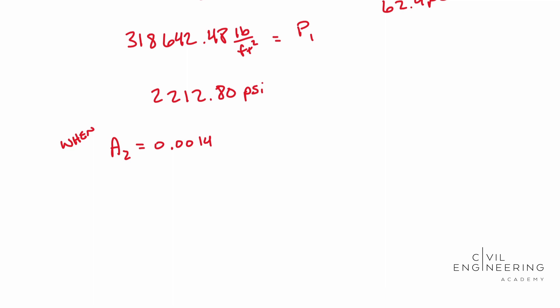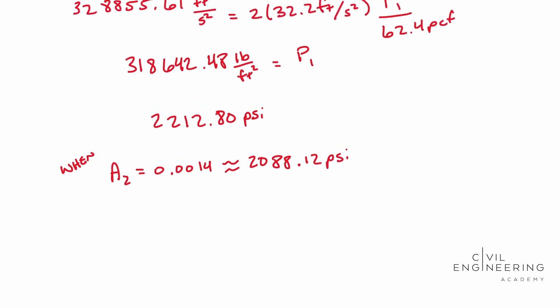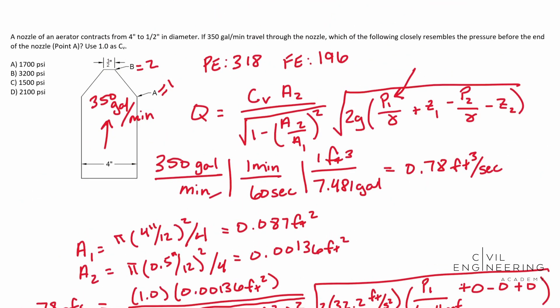So when you have A2 equal to 0.0014, so in other words, if you round that, your answer will be pretty close, but it'll be off by just a little bit. You will end up with 2088.12. And so in this case, in our answer bank, let's see, we're looking for 2200 or 2100. And it looks like they have 2100. And so in this case, the question says, let's see, which of the following closely resembles? So this is what they'll do just to cover their bases and basically have the correct answer regardless of how you round. So I hope this video helps and we'll catch you next time.